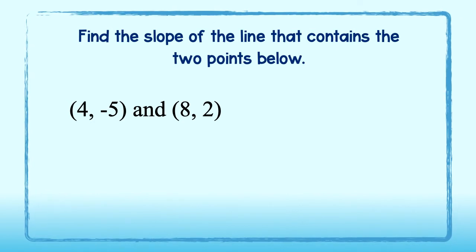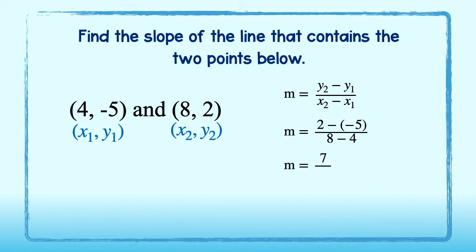Okay, you give it a try. Here are two points. Find the slope of the line that contains them. Alright, let's start by writing down our formula m equals y2 minus y1 over x2 minus x1. We will denote the first ordered pair as being x1 and y1 and the second is x2 and y2. We will now plug these values into our formula. 2 minus negative 5 is 7 and 8 minus 4 is equal to 4. The slope of the line that passes through these points is 7 fourths.